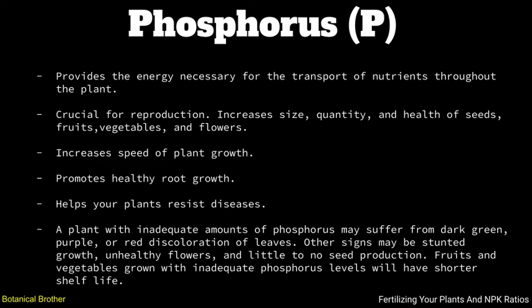Next up is phosphorus. Phosphorus provides the energy necessary for the transport of nutrients throughout your plant. It's crucial for reproduction — it increases the size, quantity, and health of seeds, fruits, vegetables, and flowers. Phosphorus increases the speed of plant growth, promotes healthy root growth, and helps your plant resist diseases. A plant with inadequate amounts of phosphorus may suffer from dark green, purple, or red discoloration of leaves, along with stunted growth, unhealthy flowers, and little to no seed production.